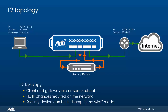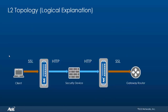In this topology, the client can directly reach the gateway since everything is on the same subnet. In our network the subnet is 30.99.0.0, the IP address for the client machine is 30.99.1.5, and the IP address for the gateway router is 30.99.1.10. The gateway has been specified on the client machine so traffic can be directed towards it. There's no IP change required on the network since it's all in layer 2, and the security device can be in bump-in-the-wire mode.